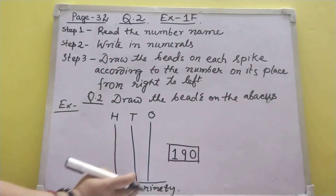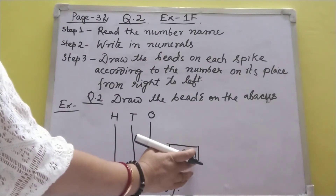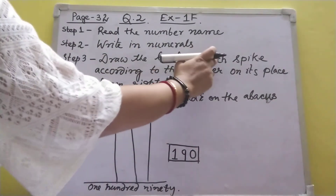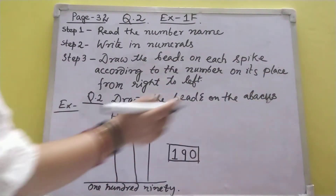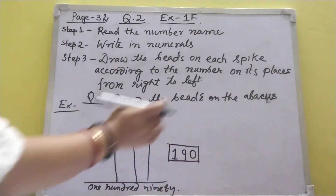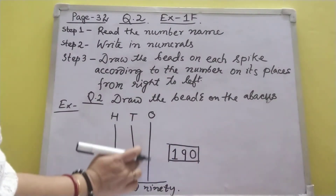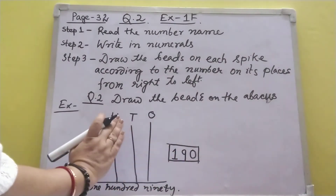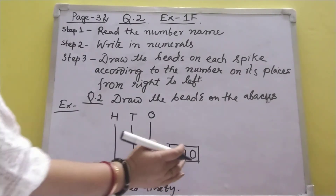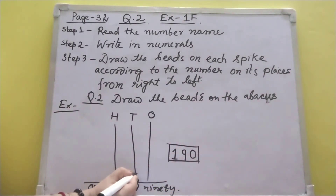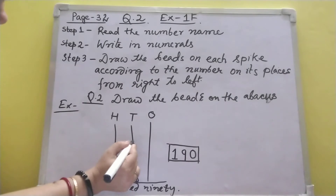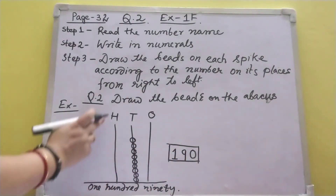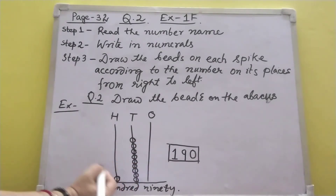Step three: how to draw the bits. In ones place: zero means nothing is there, so we do not draw any bits. In tens place: nine, so draw 1, 2, 3, 4, 5, 6, 7, 8, 9 bits. In hundreds place: one, so draw one bit. Very simple — that is example one.